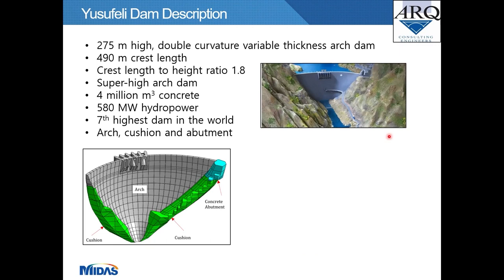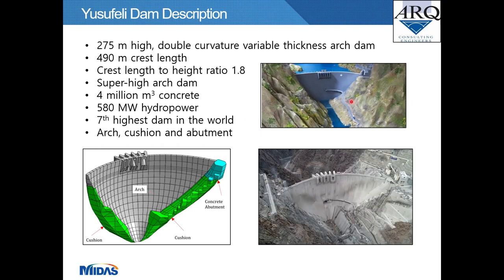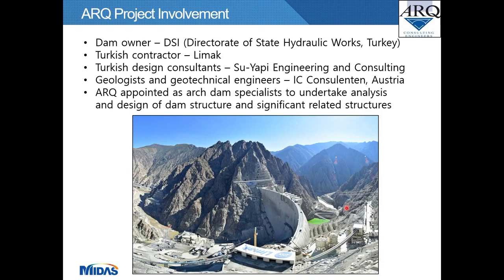The Eucefli Dam is a 275-meter-high double-curvature variable-thickness arch dam with a crest length of 490 meters and a crest-length-to-height ratio of 1.8, classifying it as a super-high arch dam. The dam body contains 4 million cubic meters of concrete, has a hydropower output of 580 megawatts, and ranks as the seventh-highest dam in the world. The dam body components are the arch, cushion, and abutment.